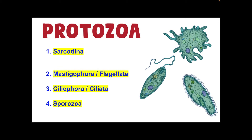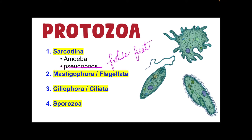For the Sarcodina, these are basically amoeba. They are equipped with the ability to extend their cytoplasm in the form of pseudopods — their organ of locomotion. We call these false feet or pseudopods. Their cytoplasm extends to form that locomotory organelle.